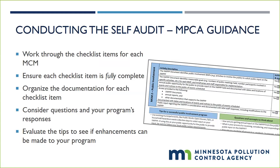The self-audit is also a good time to organize all required documentation. The MS4 general permit requires a lot of documentation to be retained, and it will be easier when you receive an audit notice from the MPCA — and for your overall program management — to have everything organized in one location. For example, organize all materials related to illicit discharge complaints or discoveries and follow-up actions in one folder.